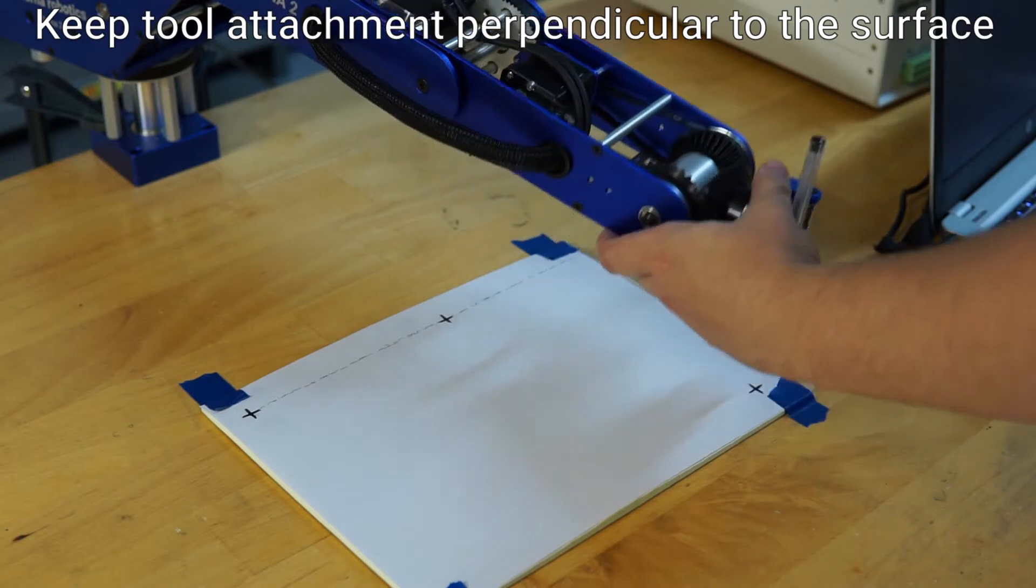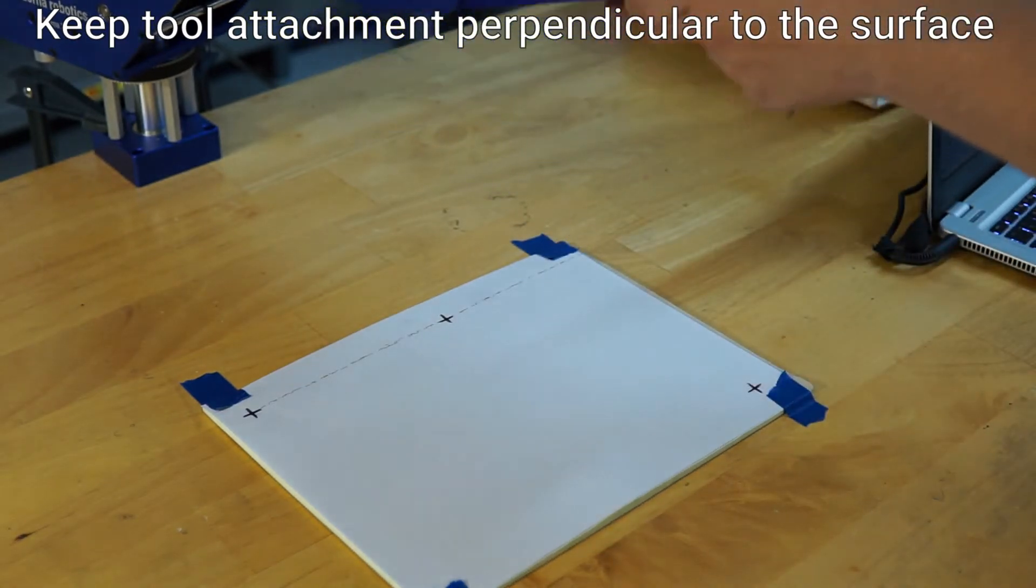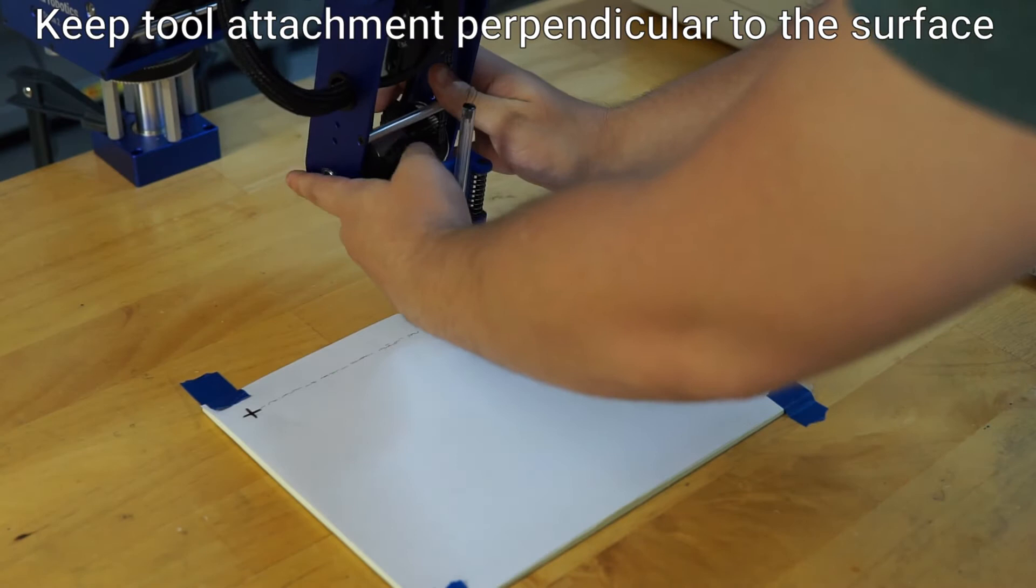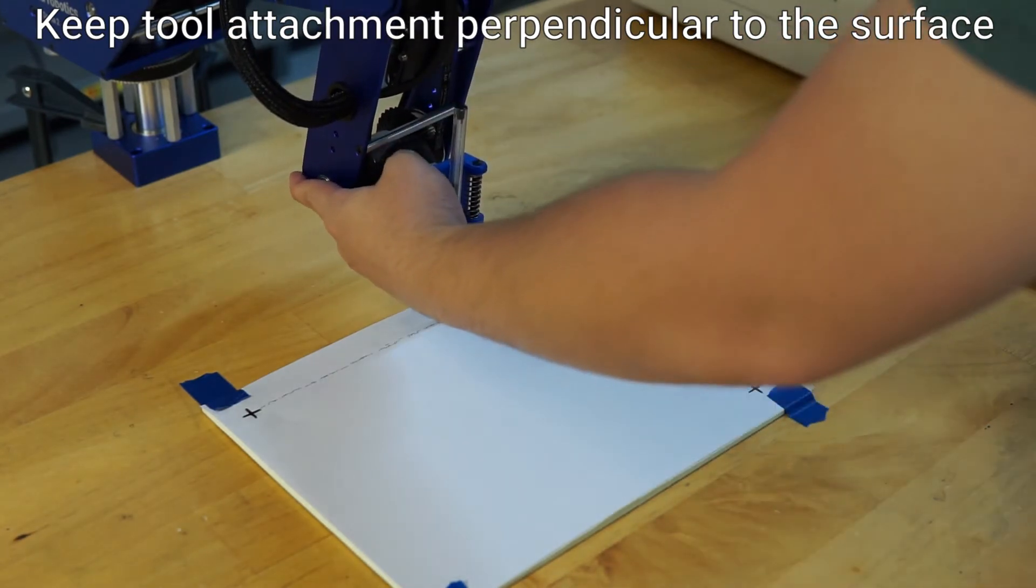When setting the points it is important to keep the toolhead attachment perpendicular to the surface. Not doing so will have the pen go deeper into the paper than wanted.